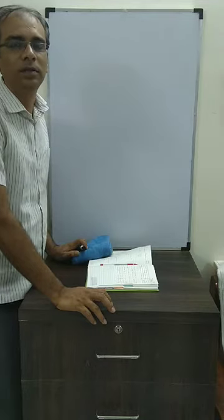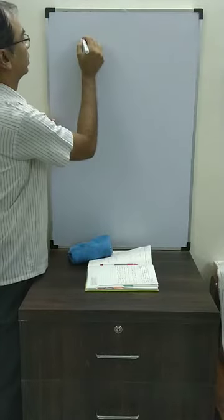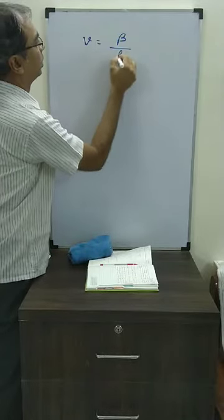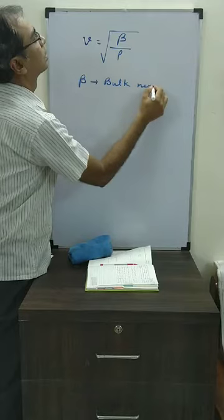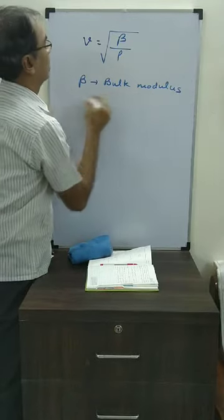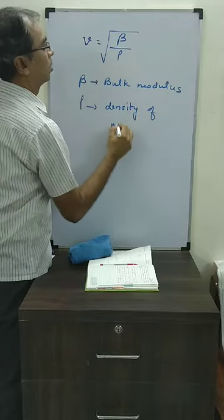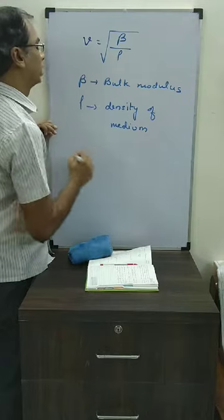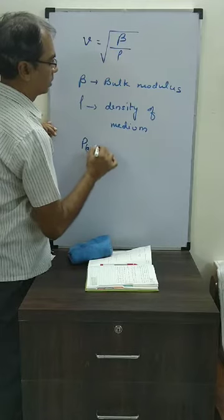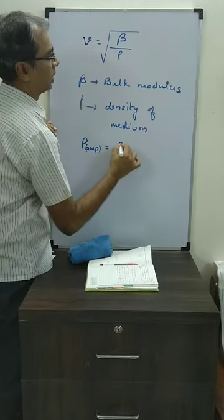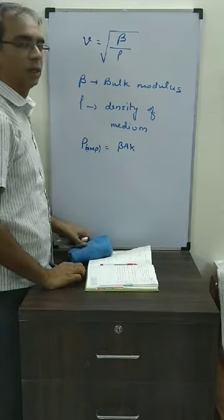Happy day students, today is class 11. In the last class, we derived the velocity of sound in the medium, which came out to be root over beta by rho, where beta is bulk modulus and rho is density of the medium. We also calculated the pressure amplitude in a pressure wave, which was beta times A times k. These were the important expressions from our last class.